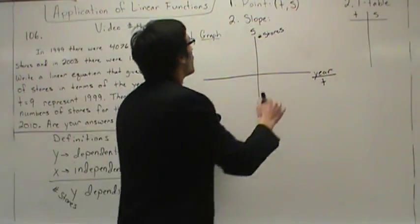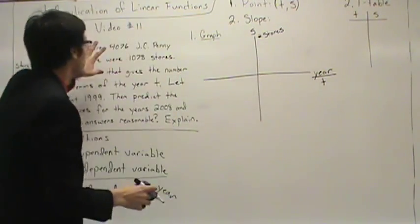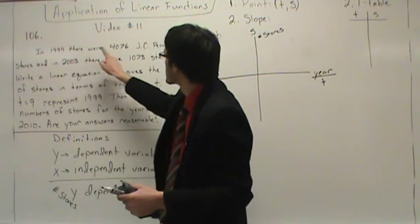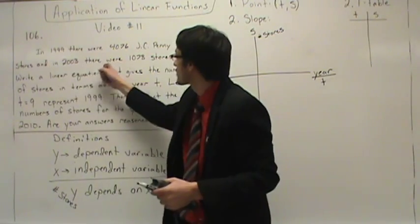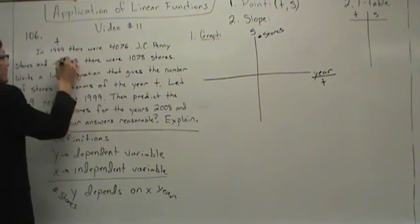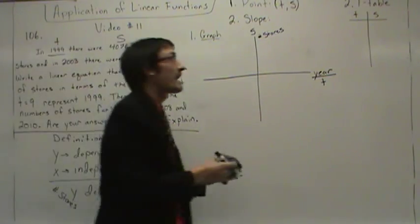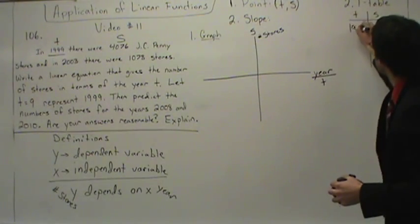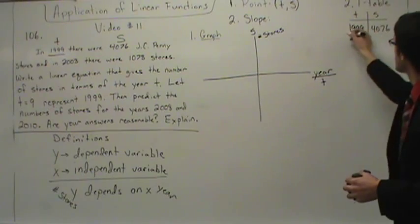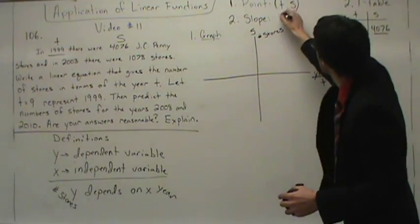Now we read the problem. What two things do you need to graph a line? You need a point and a slope. This is in the problem. It says in 1999 there were 4,076 JCPenney stores, and in 2003 there were 1,078 stores. Do you see time — the year — and do you see S — the number of stores? Yes. So we're going to write: time is 1999, and the number of stores are 4,076. You see an ordered pair.